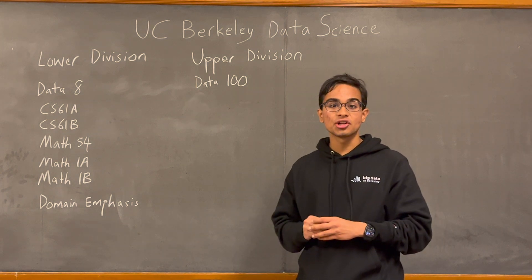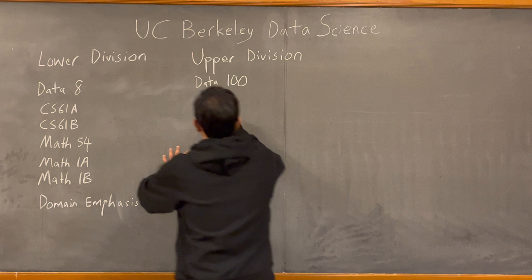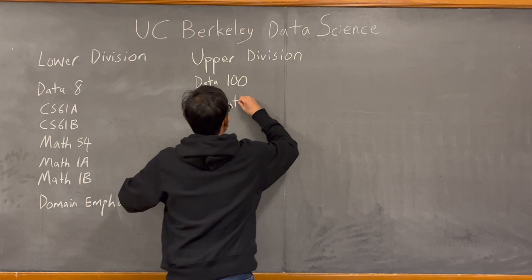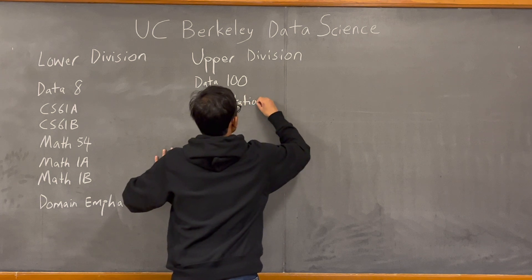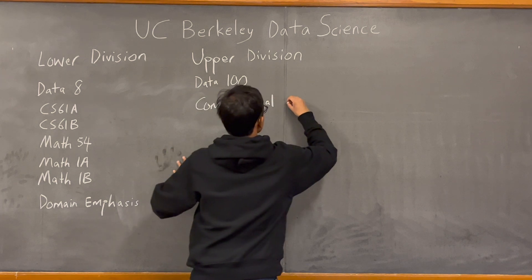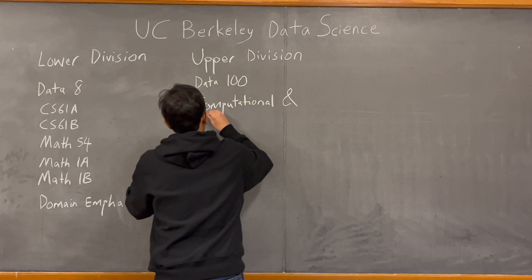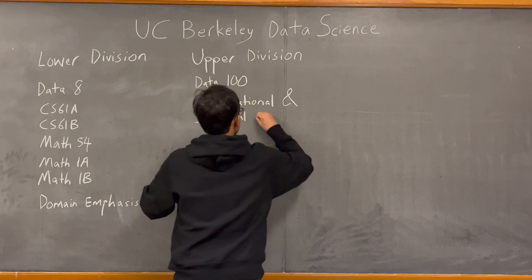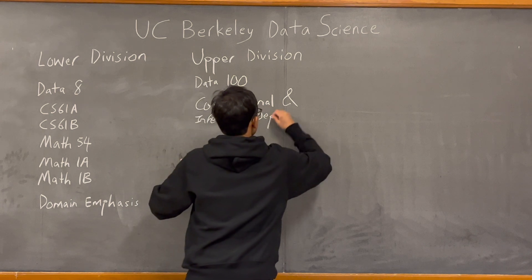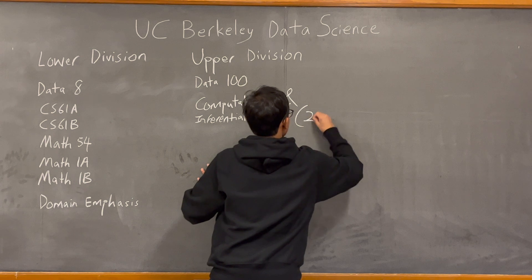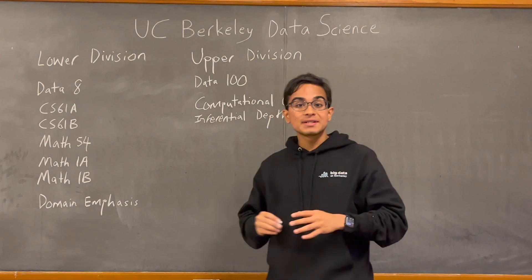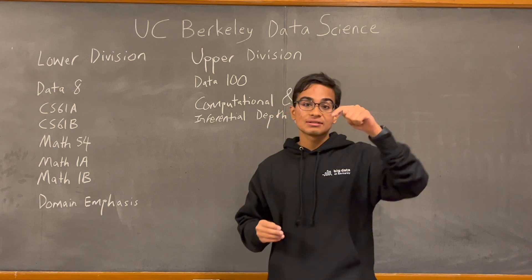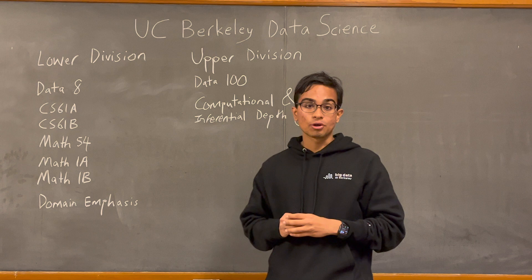Next, Computational and Inferential Depth. This requirement is seven units, which means you have to take two classes. There's a list of classes linked in the description below that satisfy this requirement.